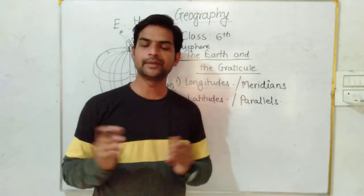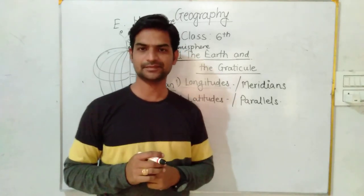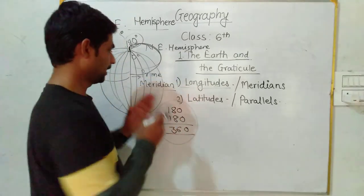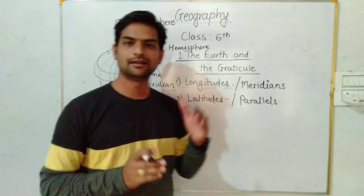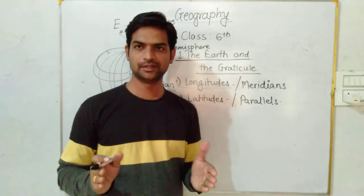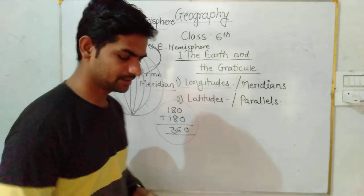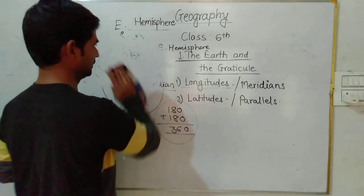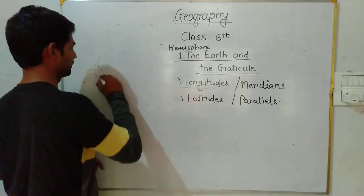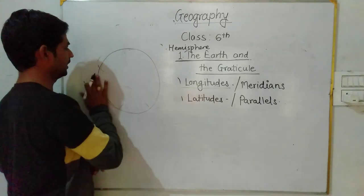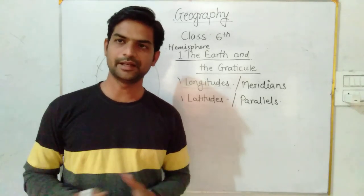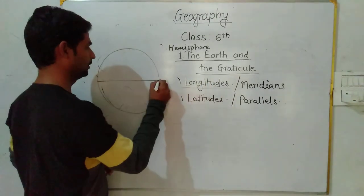The number of meridians is 360 meridians. In the Eastern Hemisphere there are 180 meridians, and in the Western Hemisphere there are 180 meridians. I hope you understood the number of meridians. Now we will discuss about the parallels. Parallels are the imaginary lines which run from east to west.